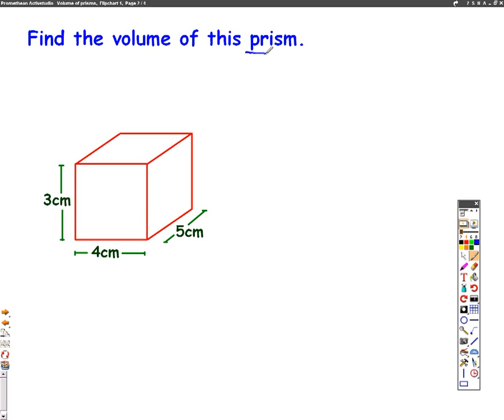Well, a prism is just a shape which has the same area all the way through. So if I want to find the volume of this cuboid, I need to use this formula. Volume equals the area times how far back it goes. Volume equals A times L.